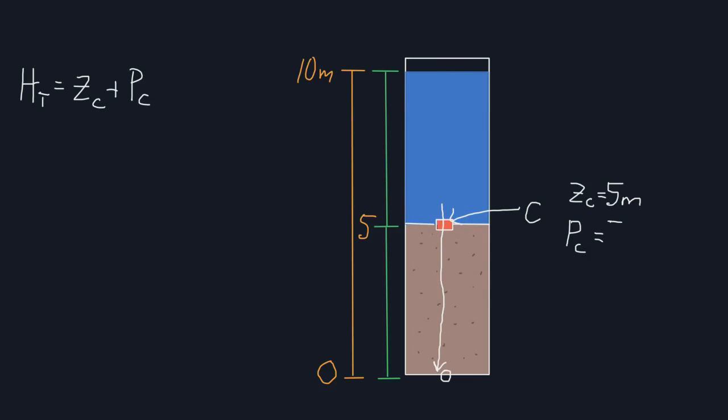There's 5 meters of water above our point C that are exerting pressure on our point C. So that's our pressure head. It's 5 meters of water exerting pressure on our point that we're measuring. So our pressure head at C is 5 meters.